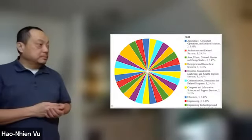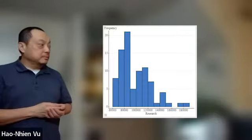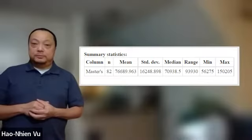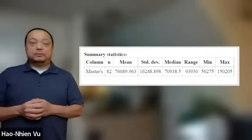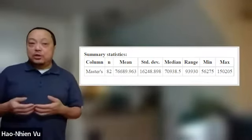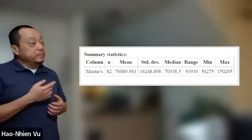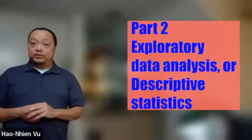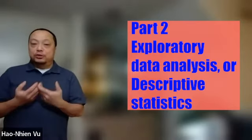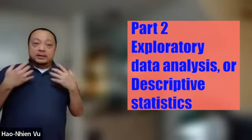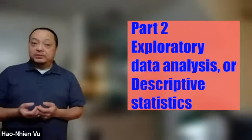You can summarize the data in some sort of graphs, or in a few summarized numbers like average and such. Actually, in stats we consider the word average to be ambiguous, so we use the word mean instead. That would be the second part of the course, where you learn to make different kinds of graphs and charts and to compute the summary statistics. That second part is exploratory data analysis, or descriptive statistics.